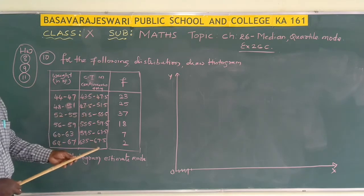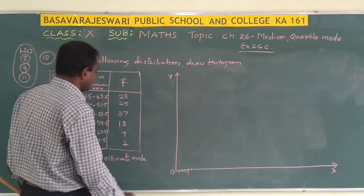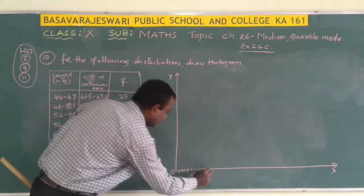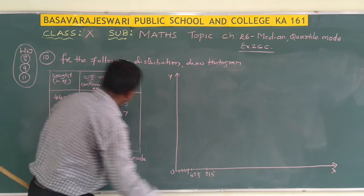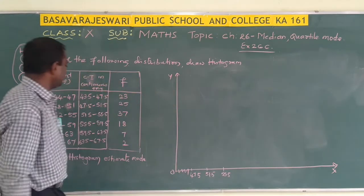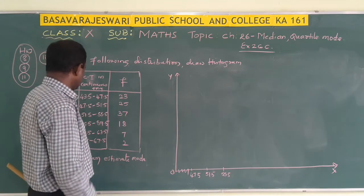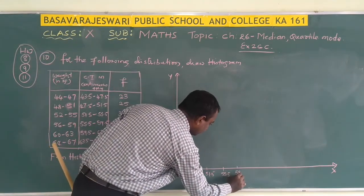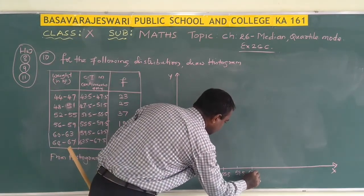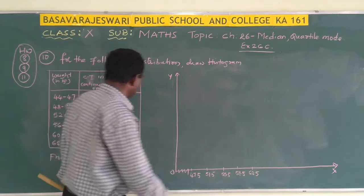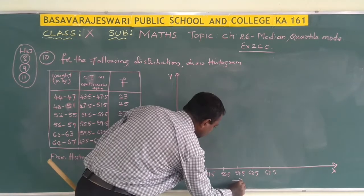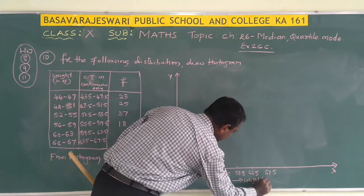Now we only have to take the upper limits: 47.5, 51.5, 55.5, 59.5, 63.5, and 67.5. This is the weight in kg along the x-axis.